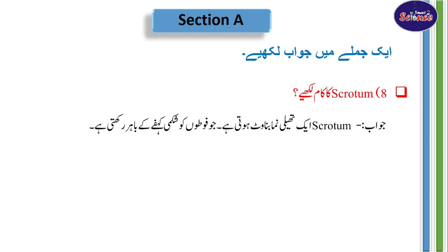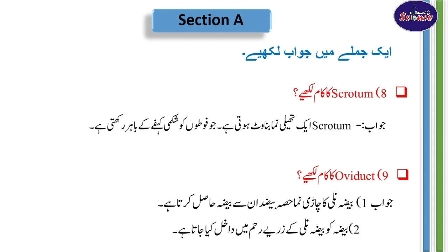Question number 9: Oviduct کا کام لکھیے۔ جواب: Oviduct بیضہ نلی کا چارہ نما حصہ بیضہ دان سے بیضہ حاصل کرتا ہے۔ Oviduct جو ہے یہ بیضہ دان نلی کا چارہ نما حصہ ہے، اس حصے سے egg cell حاصل کی جاتی ہے۔